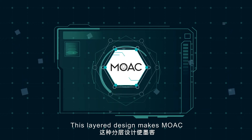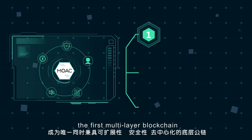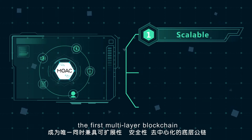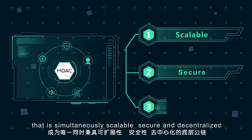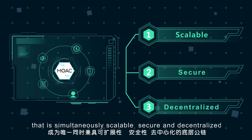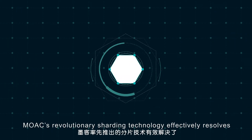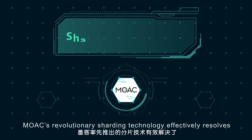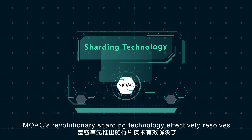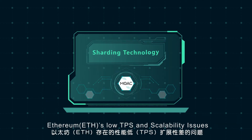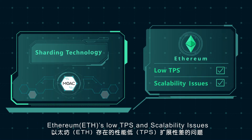This layered design makes Moac the first multi-layer blockchain that is simultaneously scalable, secure, and decentralized. Moac's revolutionary sharding technology effectively resolves Ethereum's low TPS and scalability issues.